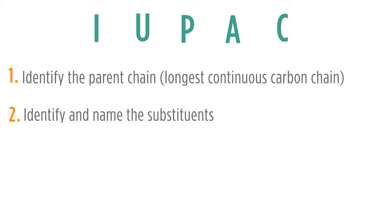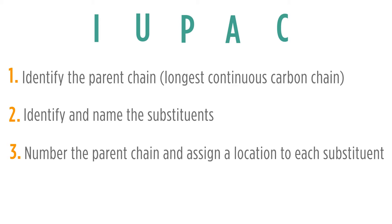Second, identify and name the substituents. A substituent is a group that is not contained within the parent chain. Third, number the parent chain and assign a location to each substituent. It's important to remember that every substituent has its own number or location. Fourth, arrange the substituents alphabetically.